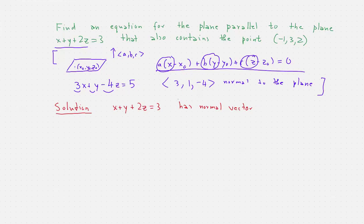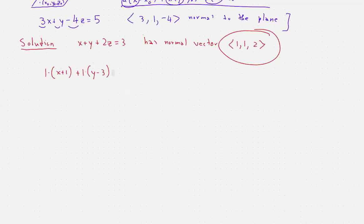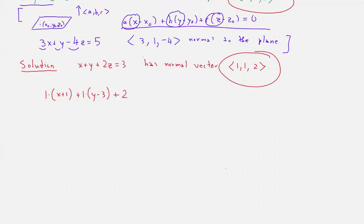And so now we have the vector 1, 1, 2, we have the point negative 1, 3, 2, we combine them together, and we get 1 times x plus 1 plus 1 times y minus 3, plus 2z minus 2, is equal to 0.